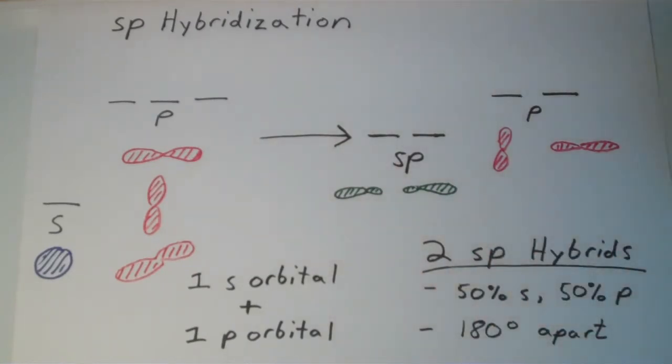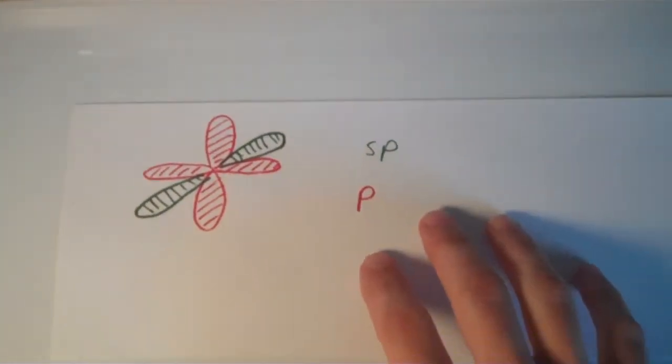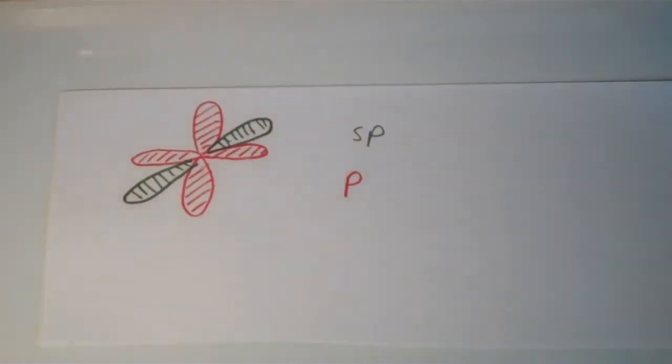In this picture, the orbitals are shown separately, but let's look at a picture in which the orbitals are shown together. So what's going on with this picture? We have our sp hybrid orbitals and our p orbitals all shown together.